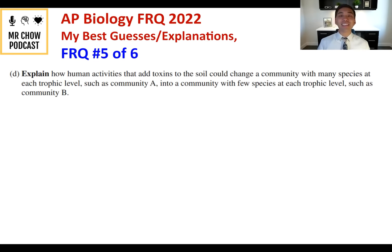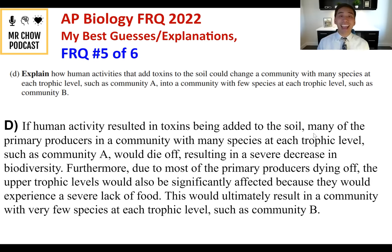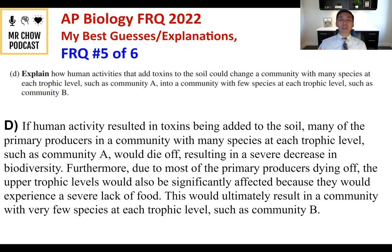Question 5D: Explain how human activities adding toxins to soil could change community A into community B. If toxins are added to the soil, many primary producers in community A would die off. This affects the primary consumers, then secondary and tertiary consumers — moving all the way up the chain, causing a severe decrease in biodiversity. Due to primary producers dying, upper trophic levels experience a severe lack of food, ultimately resulting in a community with very few species at each trophic level, like community B.